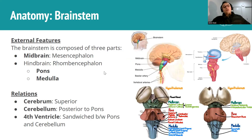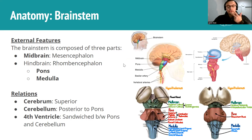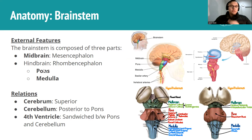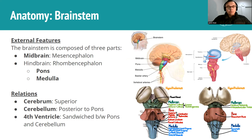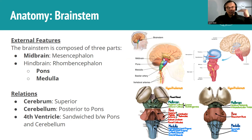In terms of anatomy of the brainstem, we only care about three parts: the midbrain, the pons, and the medulla. The midbrain is a mesencephalon structure embryologically. The pons and the medulla are both hindbrain structures derived from the rhombencephalon embryologically. You can see them from superior to inferior on the images - midbrain on top, then the pons and the medulla.